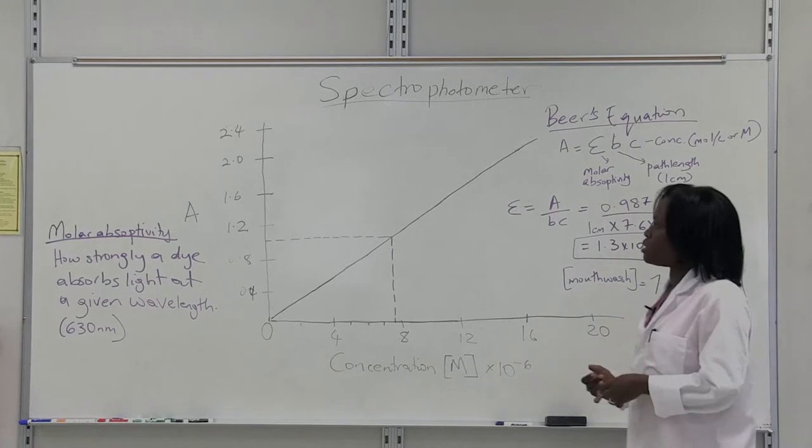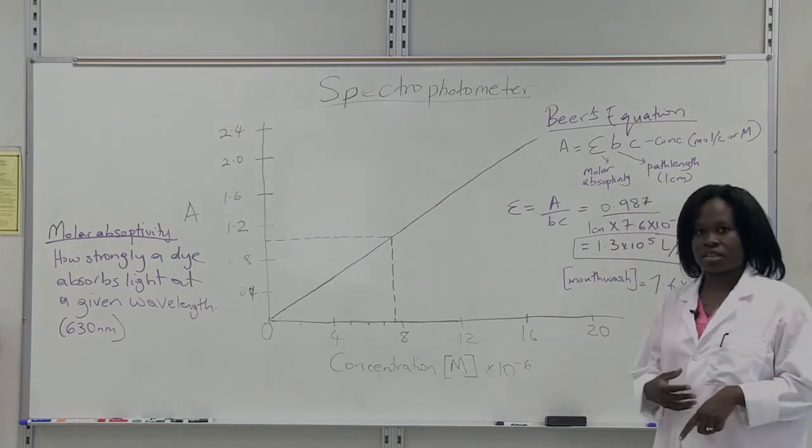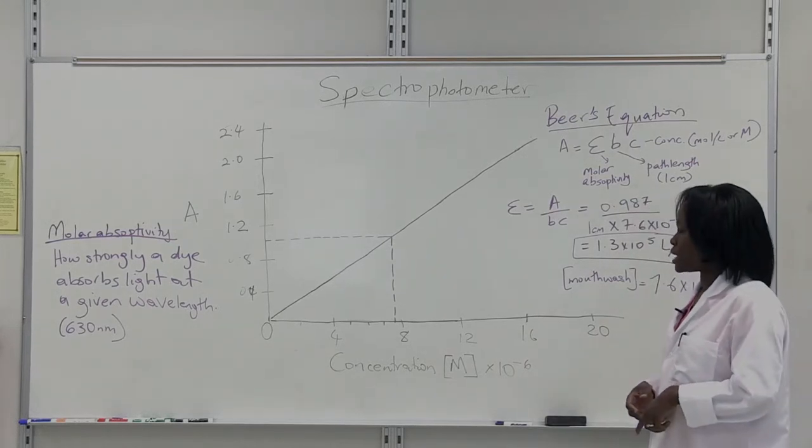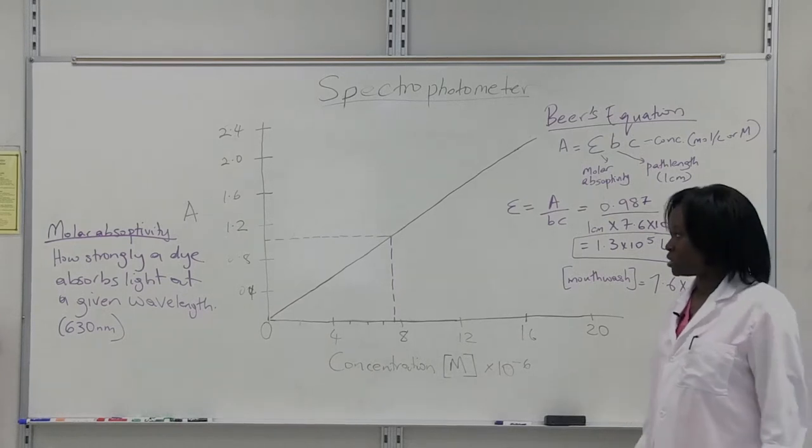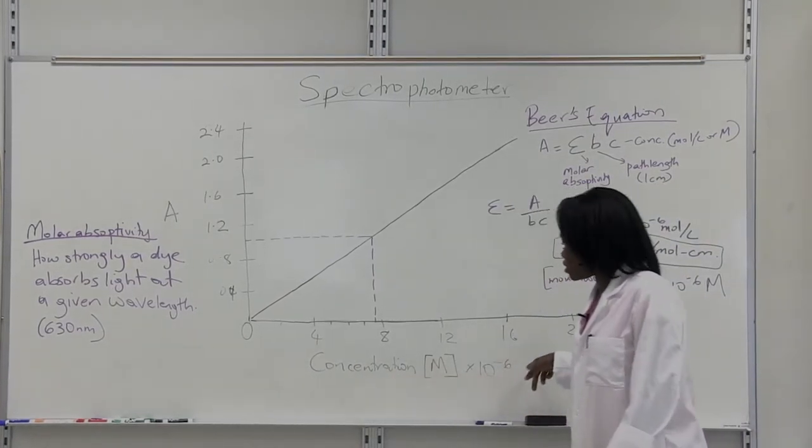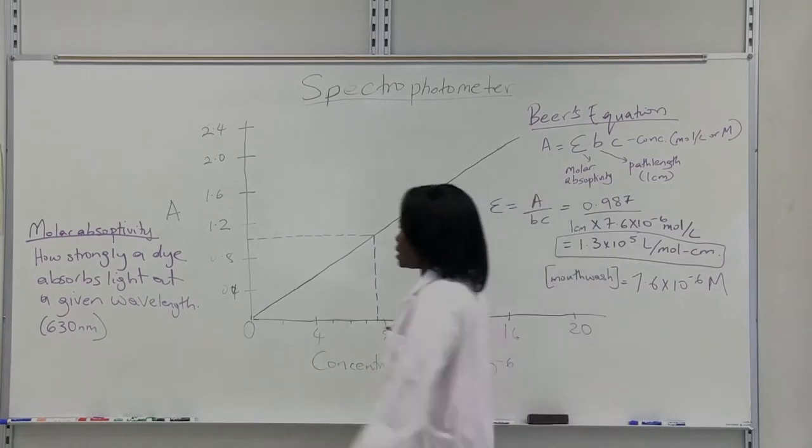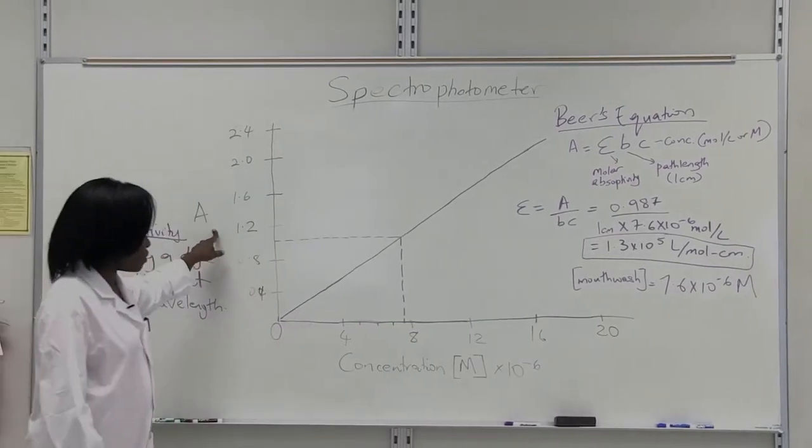And then when you determine the absorbance and the percentage transmission, you can actually come up with your calibration curve, which is your concentration on your x-axis plotted against your absorbance on your y-axis.